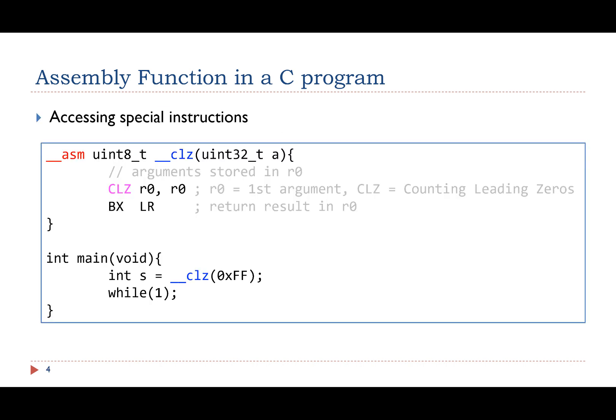Sometimes, a C program has to use assembly instructions to make optimizations or access processor-specific instructions. For example, ARM Cortex-M4 offers a special instruction called CLZ. It counts the number of leading zeros in a 32-bit integer. In order to use this instruction in a C program, we can wrap the CLZ instruction in a C function. Then, this C function can be conveniently called by other C programs.